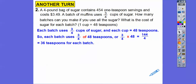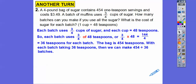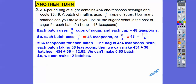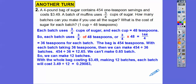So we have the bag with 454 teaspoons — the four-pound label we don't need, just the 454 teaspoons. If each batch takes 36 teaspoons, we divide 454 by 36, which is about 12.65. We can't make 0.65 of a batch, so we can only make 12 batches. Now if that bag of sugar costs $3.49 and we can make 12 batches, then each batch costs $3.49 divided by 12 — about 29 cents. So each batch costs about 29 cents.